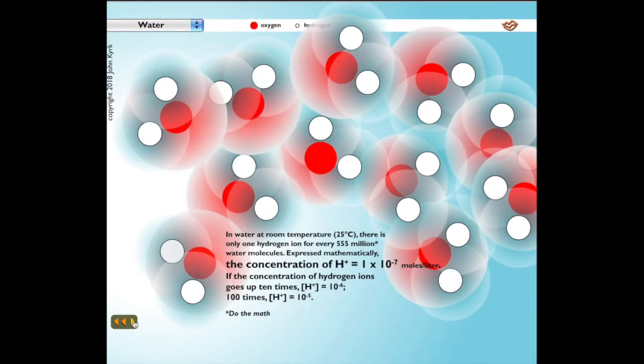In water at room temperature, or 25 degrees Celsius, there is only one hydrogen ion for every 555 million water molecules. Expressed mathematically, the concentration of H+ is 1 times 10 to the minus 7th moles per liter. If the concentration of hydrogen ion goes up 10 times, the hydrogen concentration is 10 to the minus 6th, 100 times, and it is 10 to the minus 5th.